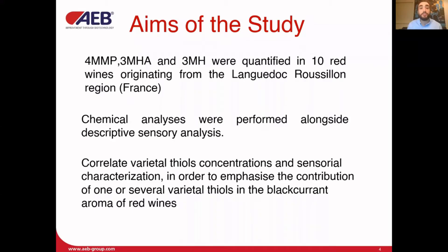Using a newly developed and more precise method, 4MMP, 3MH, and 3MHA were quantified in 10 red wines that may have a typical blackcurrant aroma. These analyses were performed alongside descriptive sensory analysis, and using statistical methods they correlated varietal thiol concentration with sensorial characterization, in order to emphasize the contribution of one or several varietal thiols in the blackcurrant aromas of red wine.